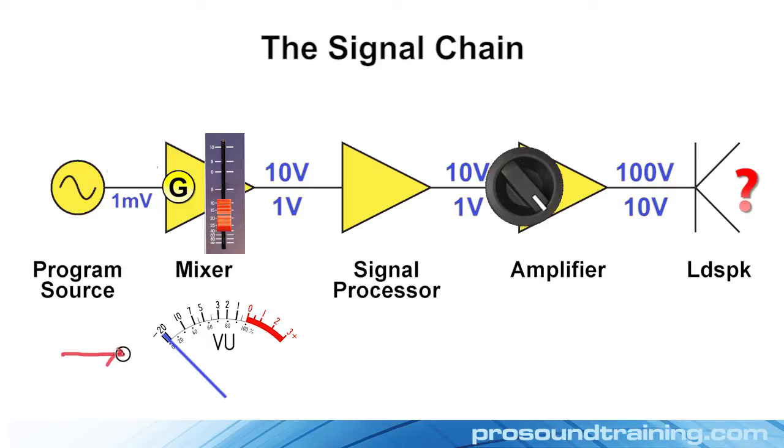The meter on the mixer is not working, the fader is way down at the bottom of its range, the signal-to-noise ratio has been compromised, and the residual noise of the system is now audible in the audience. This is classic, lousy gain structure.